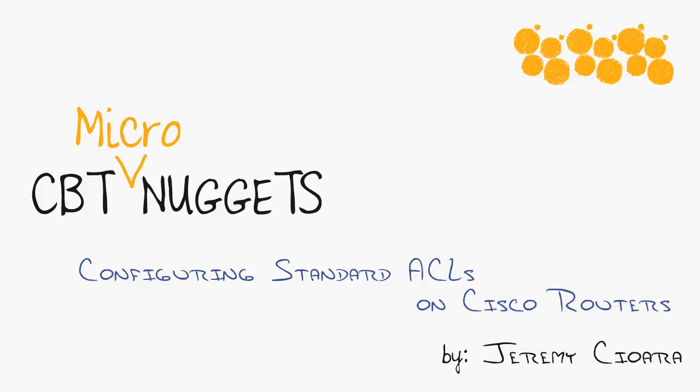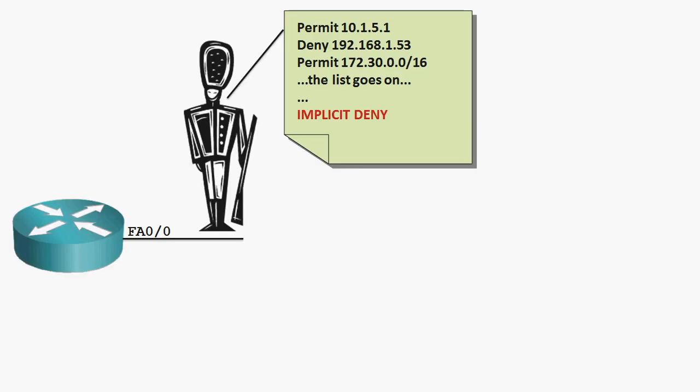If you want to know how to configure standard access lists and the time it takes to eat a Snickers bar, you've come to the right place. Access lists in general are just a list of statements saying what is permitted and what is denied. Imagine the access list is given to a guard who is guarding the inbound interface that connects your router to the internet.